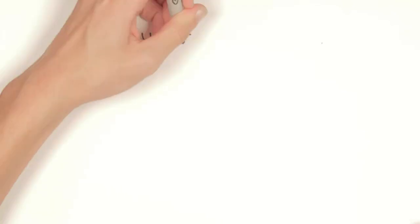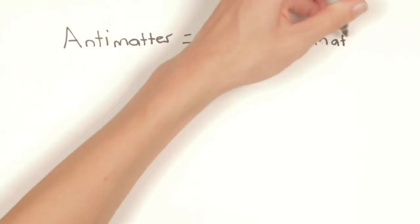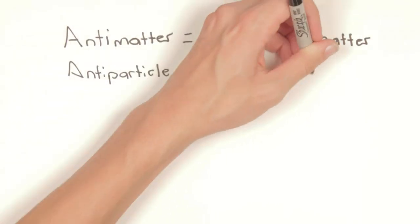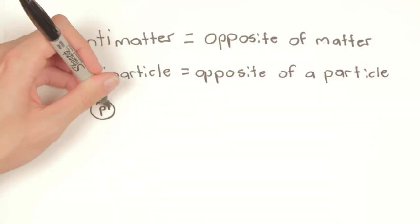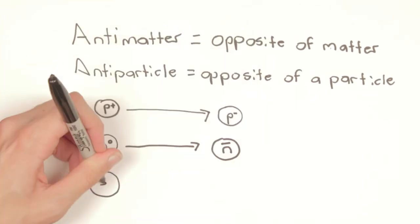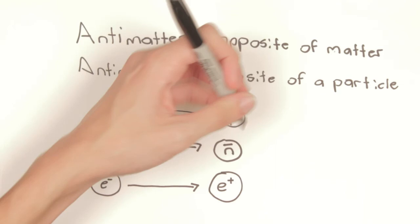Basically, antimatter is, in essence, the opposite of matter. Each particle that we know has its own antiparticle, so the antiparticle of a proton is an antiproton, the antiparticle of a neutron is an antineutron, and the antiparticle of an electron is a positron.